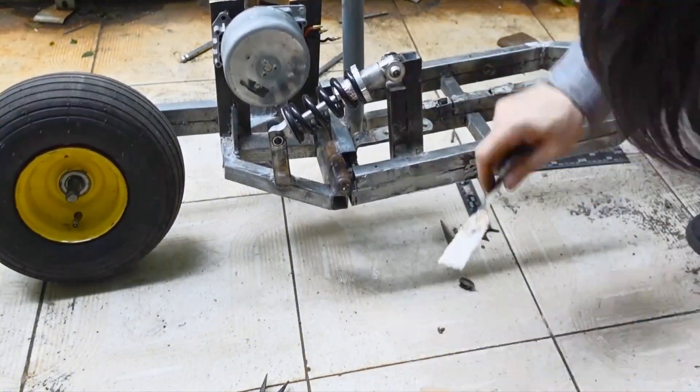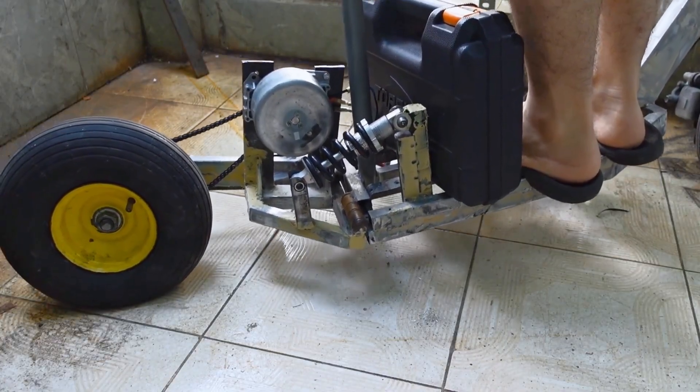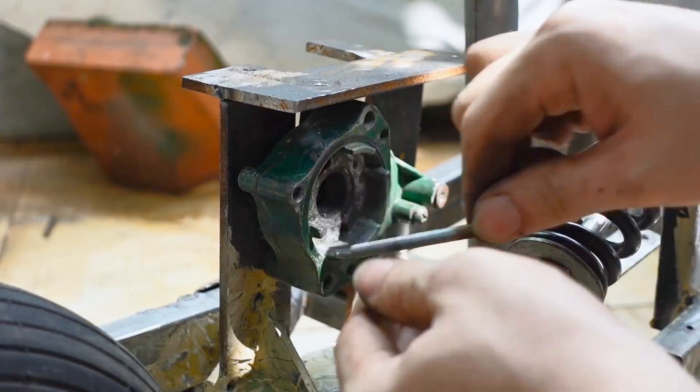DIY suspension with scavenged coil springs for damping. It wasn't pretty, but it was solid.